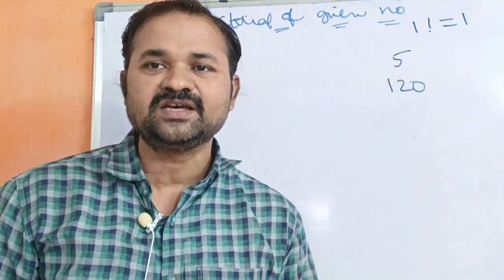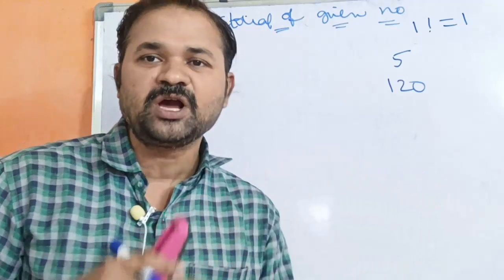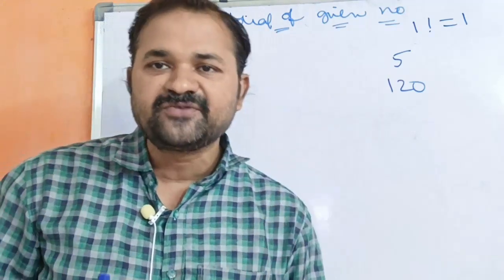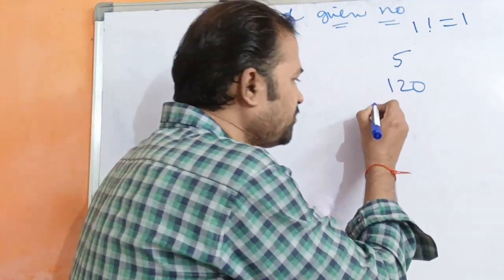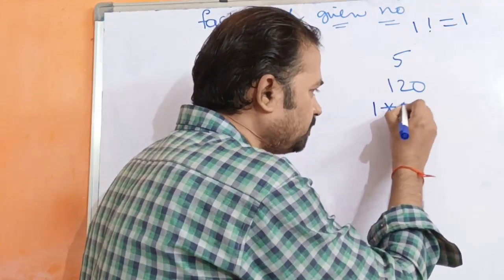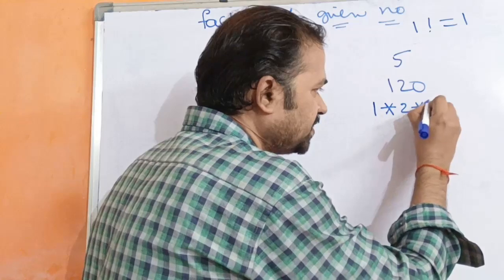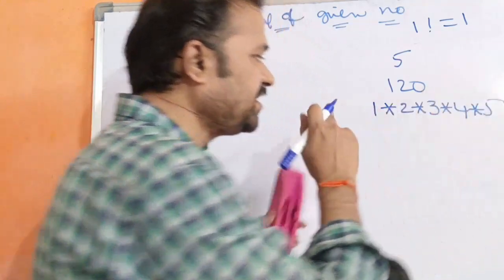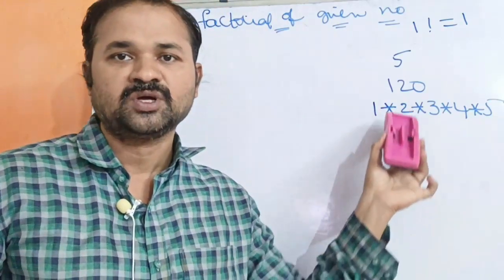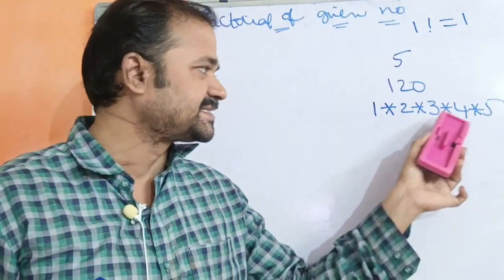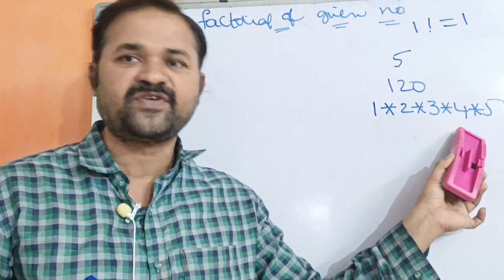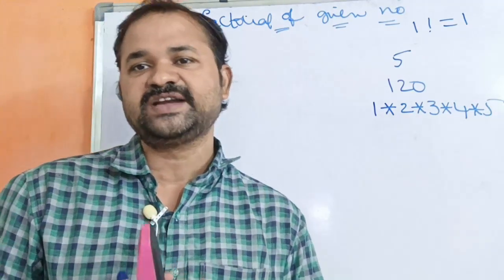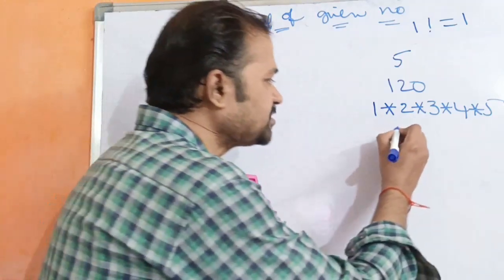Factorial of 5 anta 120. Simple ga manu 1 nunchi start chesi a number varaku multiply cheyali. So 1 into 2 into 3 into 4 into 5 cheyali. 1 into 2 anta 2, 2 into 3 anta 6, 6 into 4 anta 24, 24 into 5 anta 120. So 120 print cheyali. Suppose the number is 3.